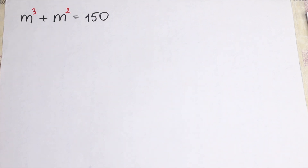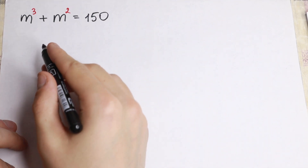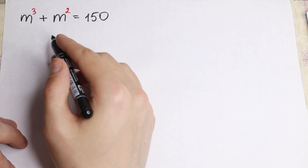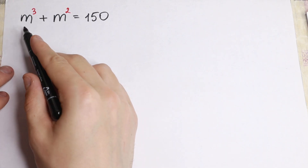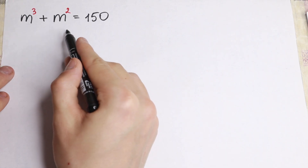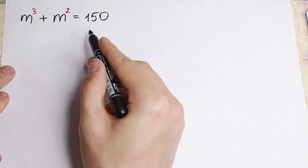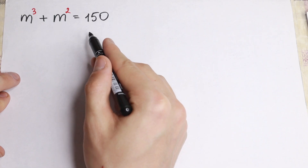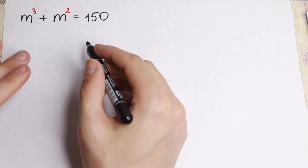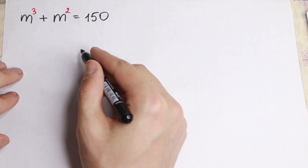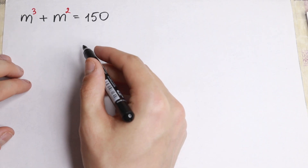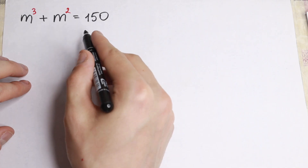Hello everyone and welcome back to higher mathematics. In this video we are going to solve this interesting algebra problem. We need to find m, where m³ plus m² equals 150. How can we solve this interesting equation and find our roots? Take a look.